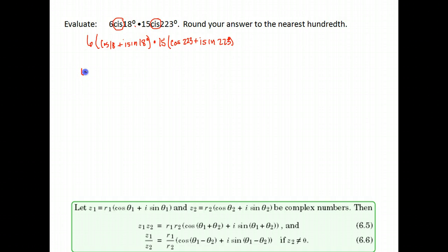Our rules say to multiply the numbers in front. So we'll have 6 times 15, cosine of, we're going to add the two angles together, 18 plus 223, plus i sine 18 plus 223.